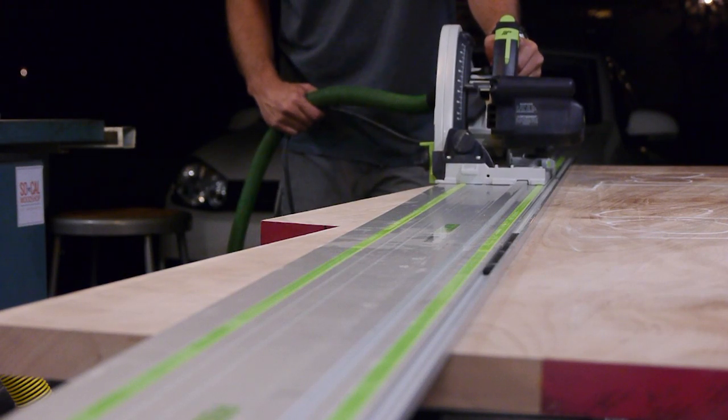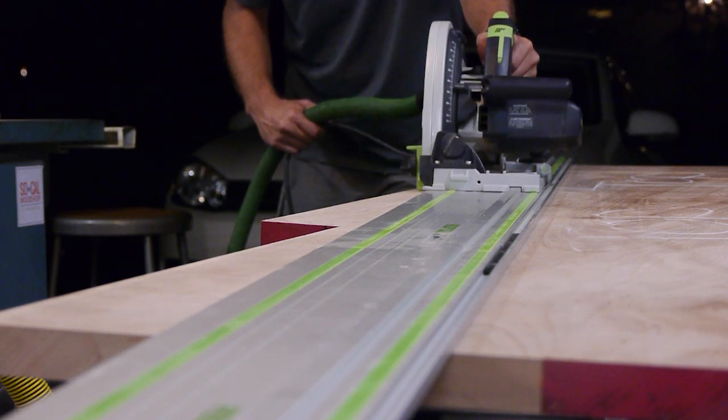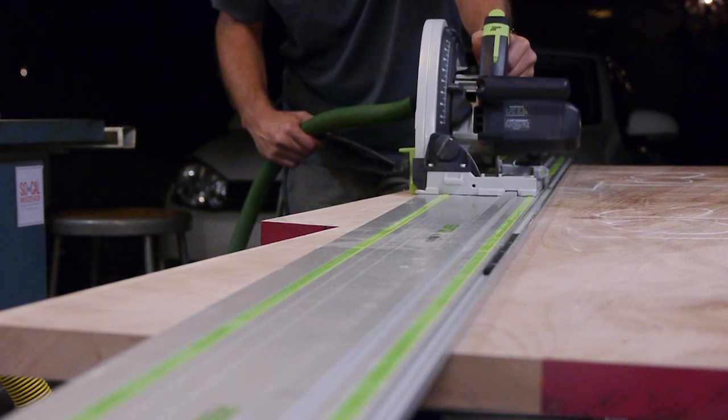From there, we could focus on getting the tabletop cut down to its final size and shape. We used a track saw to give the tabletop its nice, clean, tapered shape.